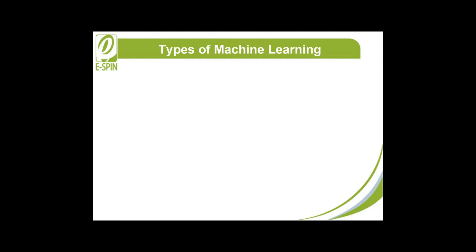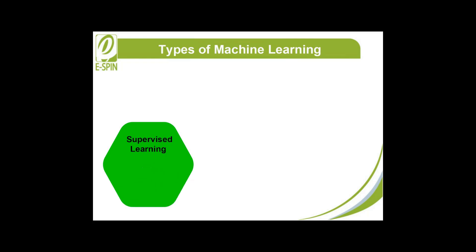Types of machine learning are categorized into three primary types. Supervised learning involves training a model on labeled data, where the input and corresponding output are predefined. It is used for classification — categorizing data into distinct groups like spam versus non-spam emails — and regression, predicting continuous outcomes like house price estimation.